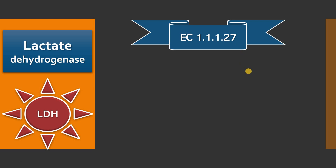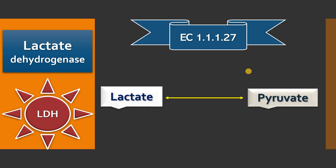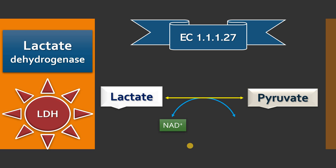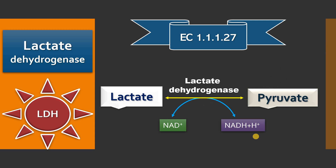This enzyme catalyzes conversion of lactate to pyruvate, or pyruvate back to lactate, by utilizing a coenzyme derived from the water-soluble vitamin niacin — NAD+. This NAD+ acquires one hydrogen atom and one proton from lactate. Eventually this NAD+ is converted to NADH + H+, that is oxidized NAD converted to reduced NAD, catalyzed by lactate dehydrogenase.